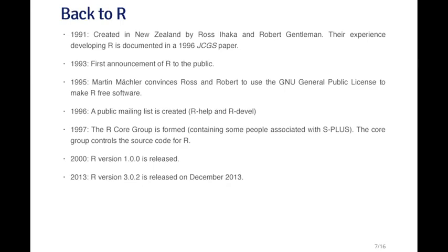In 1996, a mailing list was developed. There are two main mailing lists: R-Help, which is a general mailing list for questions, and R-Devel, which is a more specific mailing list for people doing development work in R. In 1997, what's called the R Core Group was formed, containing many of the same people who developed S Plus. The core group basically controls the source code for R — the primary source code can only be modified by members of the R Core Group, although a number of people outside the core group have suggested changes that have been accepted.